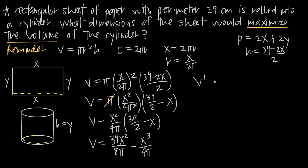We'll call the derivative V'. These are power functions, so we bring the exponent down in front. The derivative of 39x²/(8π) gives 2·39/(8π)·x = 39x/(4π). The derivative of −x³/(4π) gives −3x²/(4π). So V' = 39x/(4π) − 3x²/(4π).